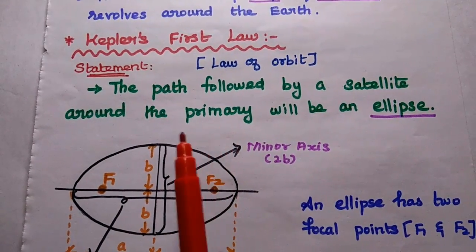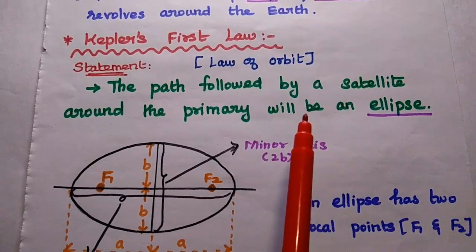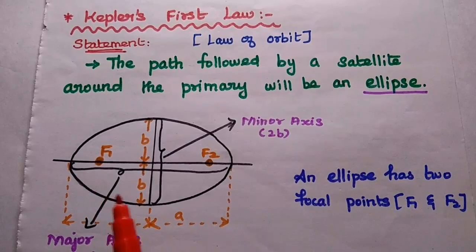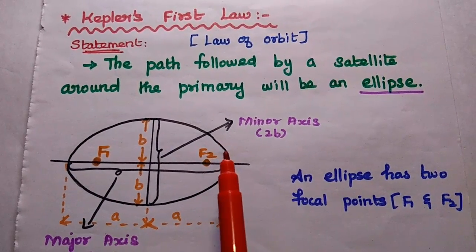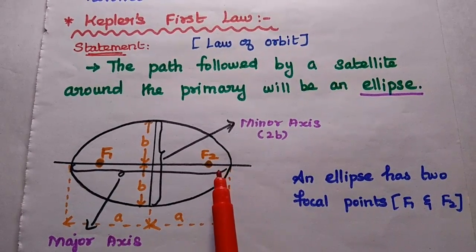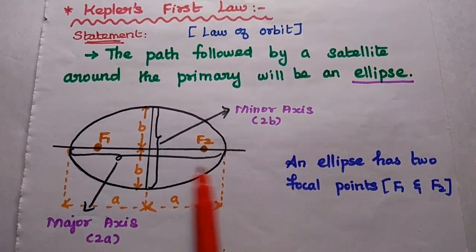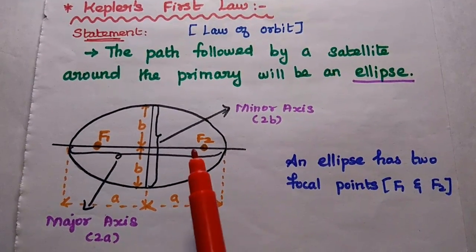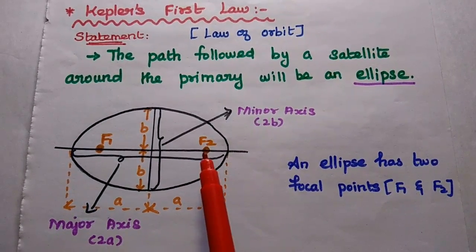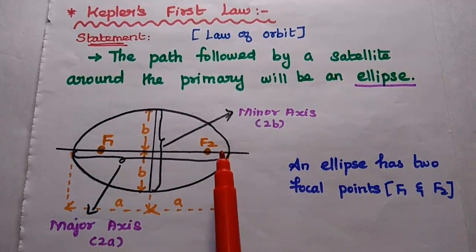Let's start with the first one, that is Kepler's first law. It is also called the law of orbit. The first law states that the path followed by a satellite around the primary will be an ellipse. That means the path of the satellite around the Earth is always an ellipse. An ellipse has two focal points, F1 and F2. The primary mass will always be centered at any one of the focal points — it can be either at F1 or F2.